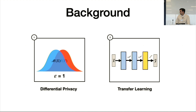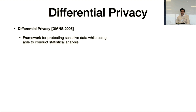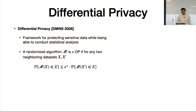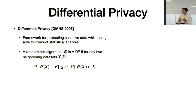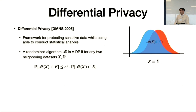To motivate our work, we need two important pieces of background: differential privacy and transfer learning. Differential privacy is a framework for protecting sensitive data that still allows statistical computations. A randomized algorithm M is epsilon-differentially private if for any two neighboring datasets — differing on at most one individual — the distribution of outcomes is at most e-to-the-epsilon close. So if epsilon equals 1 it's much harder to distinguish than if epsilon equals 10.